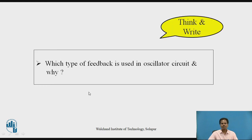Students can pause the video and think about this question: which type of feedback is used in an oscillator circuit and why? The answer is positive feedback, because it increases the effective input signal of the amplifier, which increases the strength of the initial input signal — as required in oscillator circuits.